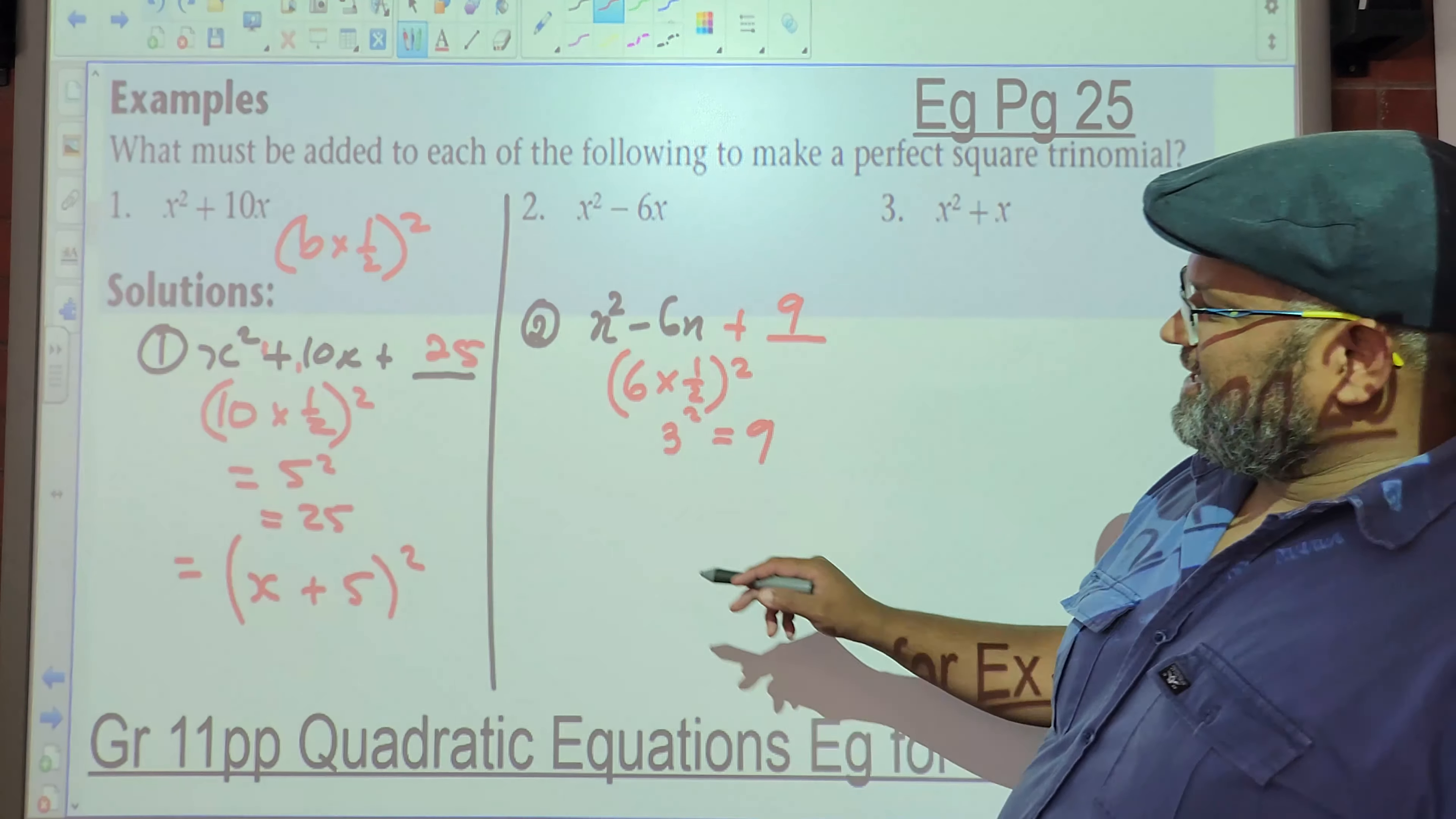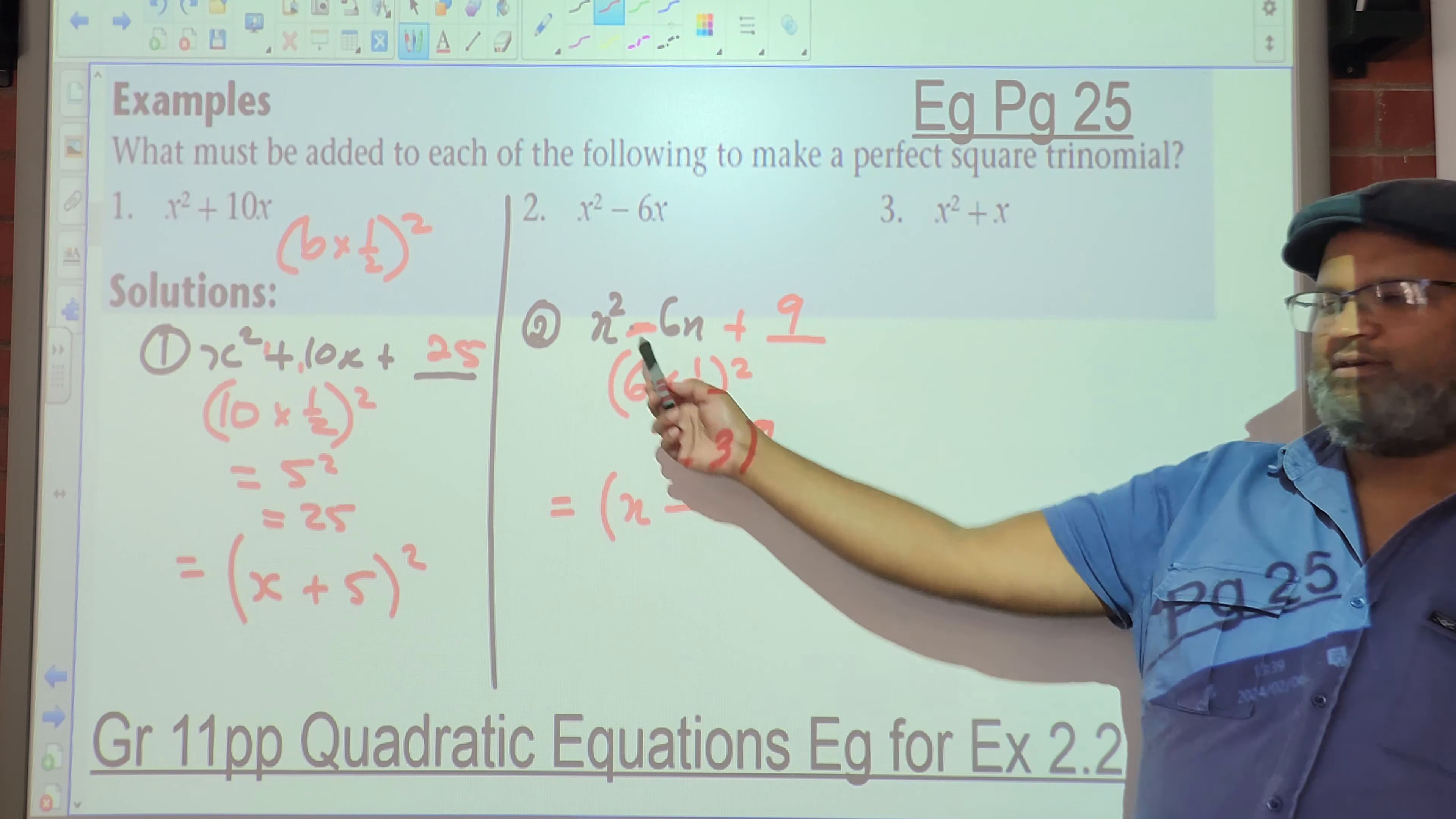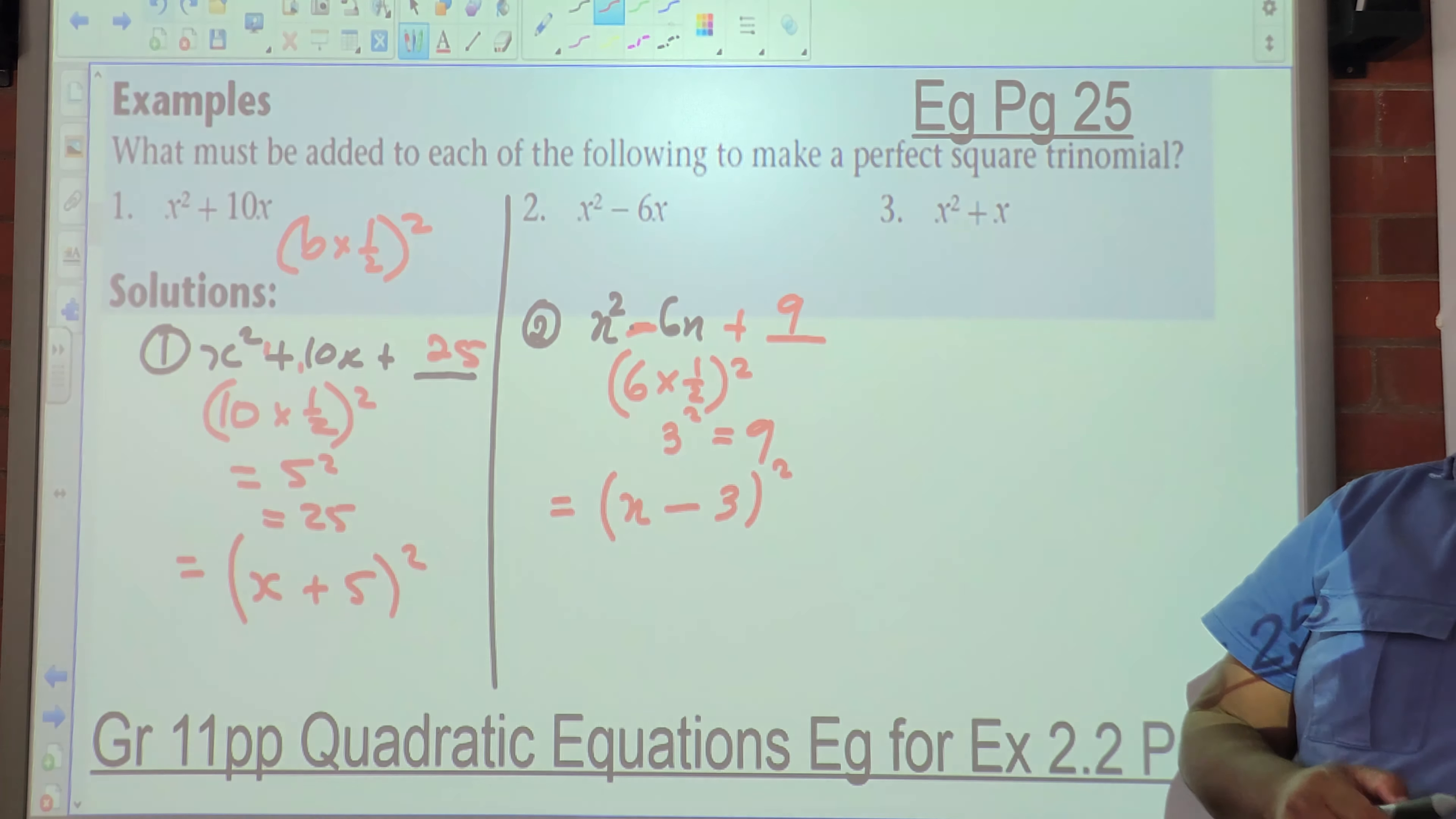Okay. We must write that as a binomial square. What should it be? (x - 3)². And we can test it. What is x²? x². What is x multiplied by negative three multiplied by two? Negative 6x. You see that? Negative three squared, in other words, negative three times negative three, which is nine. You guys understand? Yes.